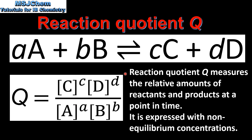The reaction quotient Q measures the relative amounts of reactants and products at a point in time. It is expressed with non-equilibrium concentrations.